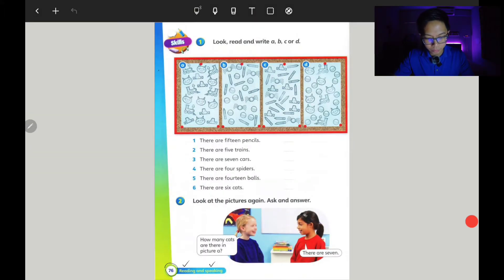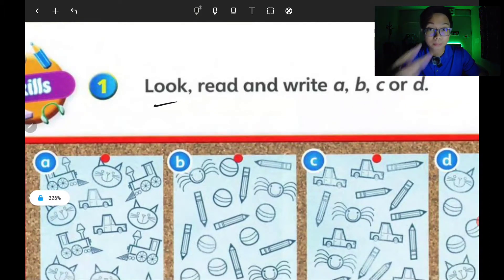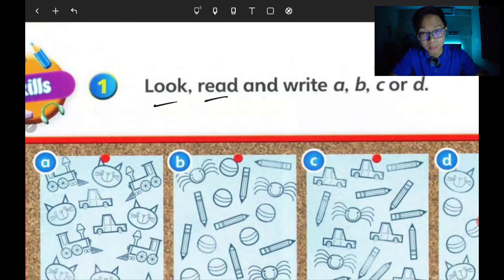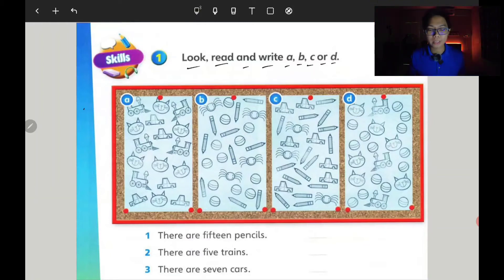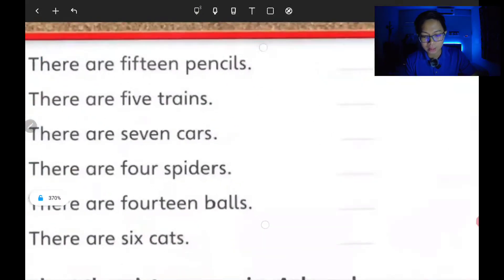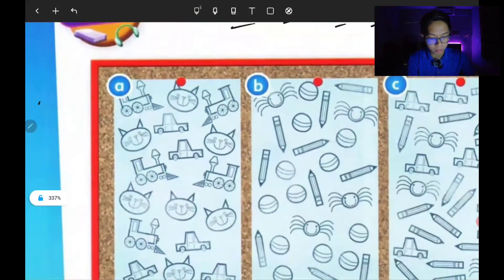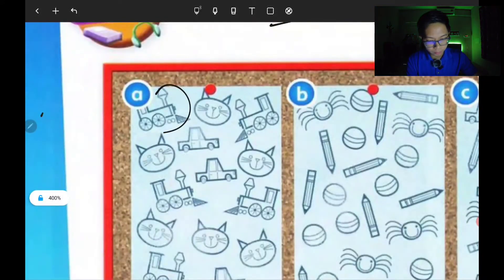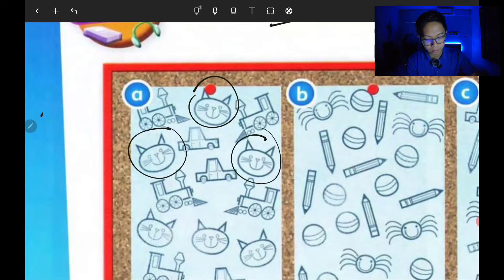Let's have a look at this Supermind book first, on activity one. The instruction is look, read, and write - it's either A, B, C, or D. We have to look, read and write, but on this textbook do not write anything. Let me do it for you, this is just a practice. Let's have a look at picture A - we have the trains, we have the cats, and then we have the cars.